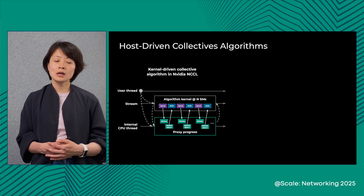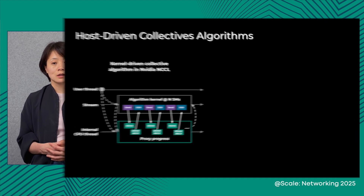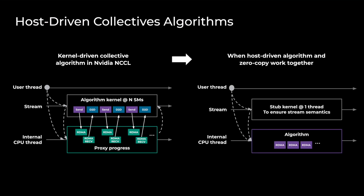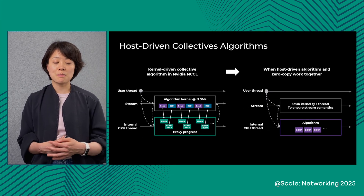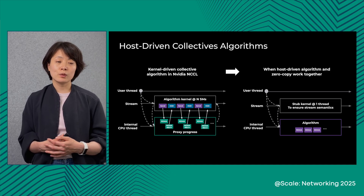In addition to the zero-copy changes, we redesigned the algorithm framework in Sichuan. NVIDIA NCCL designs algorithms driven by CUDA kernels and offloads each individual RDMA from a collective to an internal CPU host proxy thread. Although it fits well for reduction collectives such as all-reduce, it forces very frequent GPU-to-CPU synchronization, even for non-reduction collectives such as all-to-all. To avoid such forced synchronization, we designed a host-driven algorithm framework in Sichuan. For zero-copy algorithms, we no longer need any CUDA kernel involvement in a collective. As a side benefit, this enables algorithm adoption from traditional HPC communication libraries, where collective algorithms are often driven by CPU.